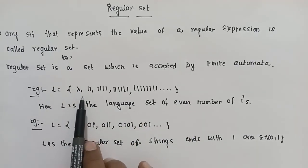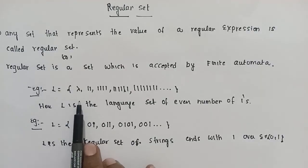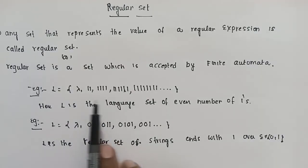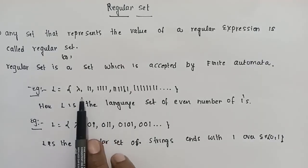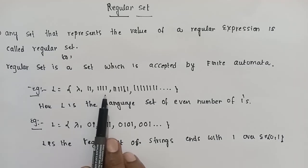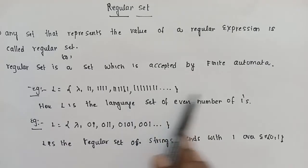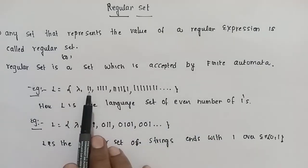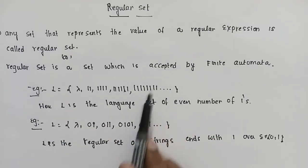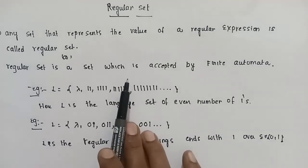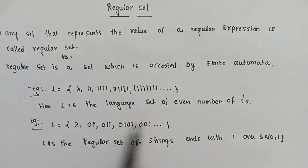That includes the null string — epsilon, also known as lambda or epsilon — which represents the null string. So we have: null string, 1 1, 1 1 1 1, and so on. This is a set of strings which contains an even number of 1s. This is a regular set example.